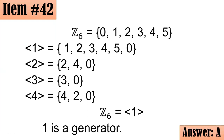In problems like this, a certain element is a generator of Z sub n if that element is relatively prime with the subscript n — meaning the GCF of the subscript and the element is 1.